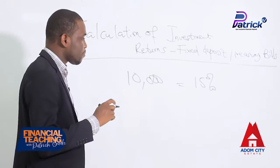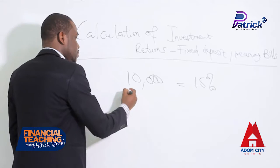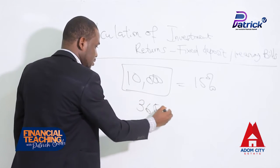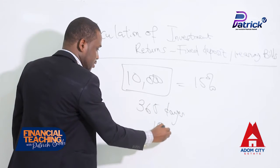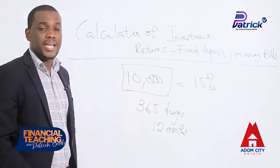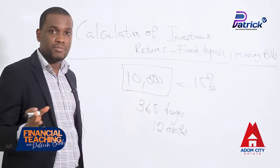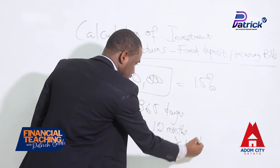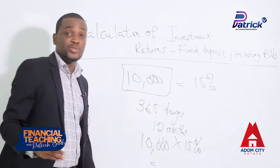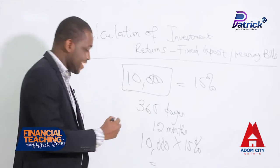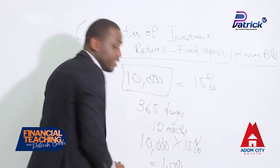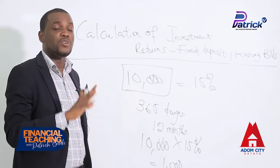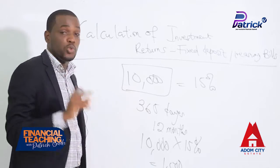Now let's watch this. What the bank is saying is that if you keep this 10,000 with them for one whole year — that's 365 days, that's 12 months — you are going to earn 15%. So let's do a rough calculation. It's going to be 10,000 multiplied by 15%, which gives us 1,500 Ghana cedis as interest that you are earning on the 10,000 for one whole year — 365 days and 12 months.